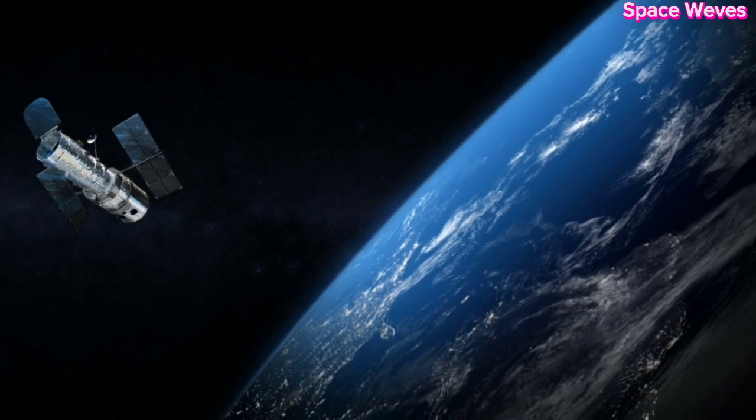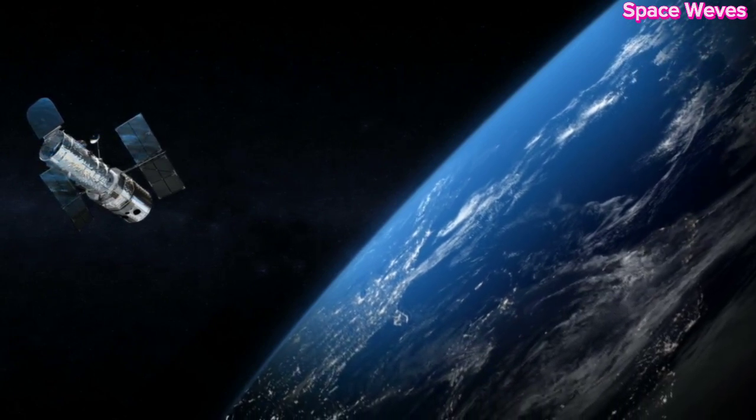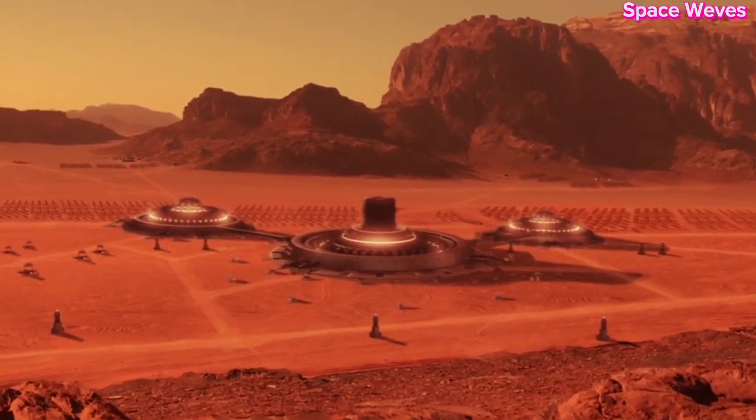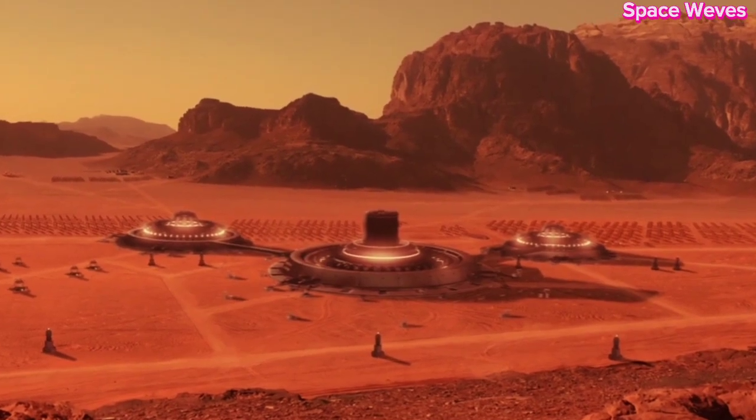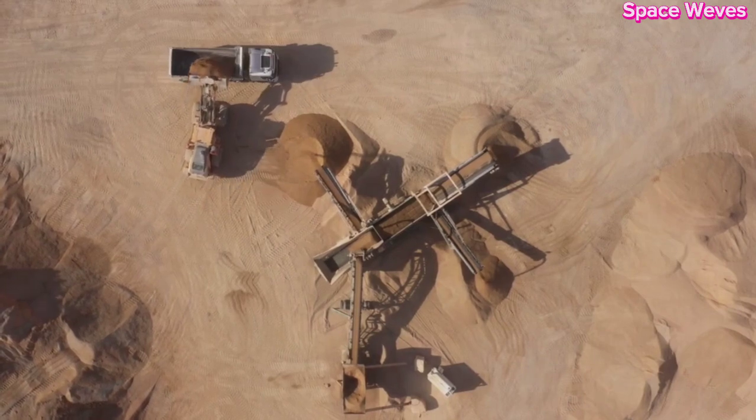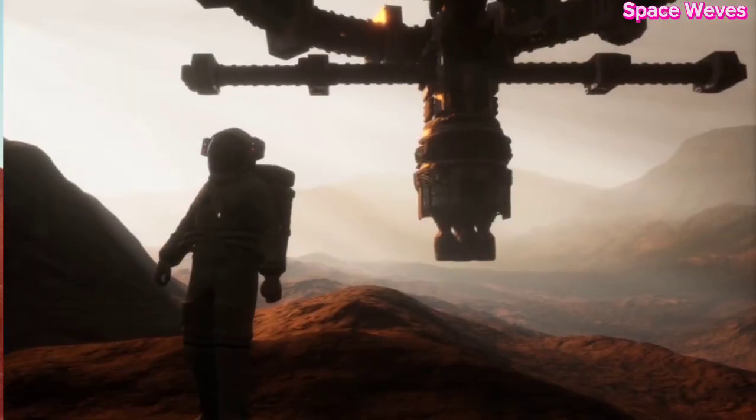Two, black hole formation. If Betelgeuse has enough mass, its core could collapse beyond the neutron star stage, forming a black hole. This would be one of the closest black holes to Earth, providing an unprecedented opportunity for scientists to study black hole formation in real time.